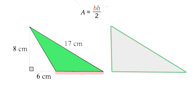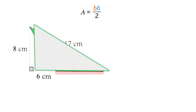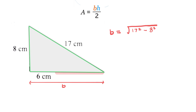To calculate the base, we'll use the fact that we have another right angle triangle, which we can put over this triangle. Now we can calculate the base of this triangle using the Pythagorean theorem. We name the base as B and use the Pythagorean theorem to say that B is equal to the root of 17 squared minus 8 squared.